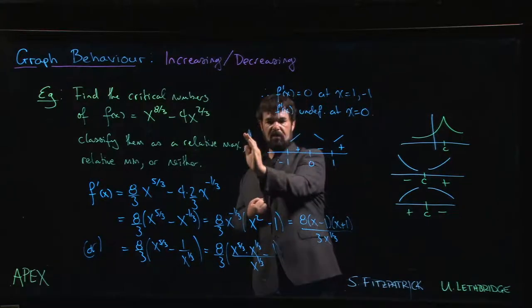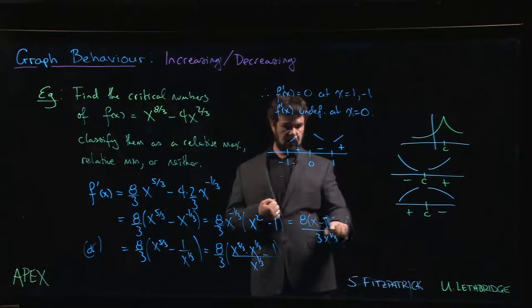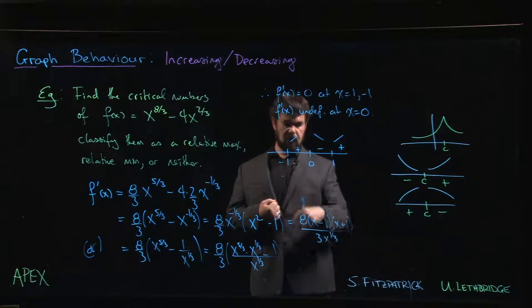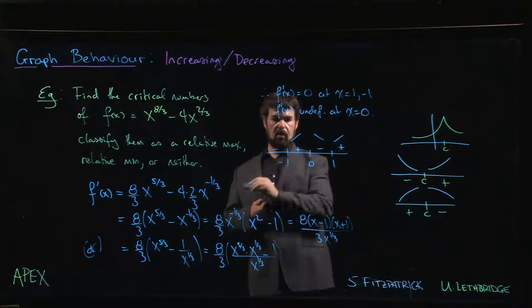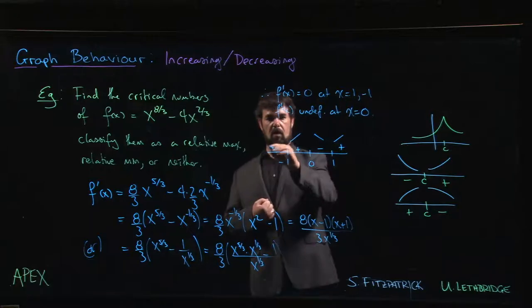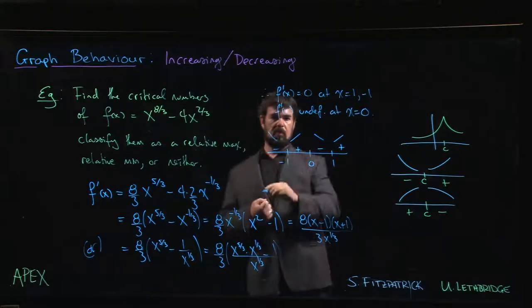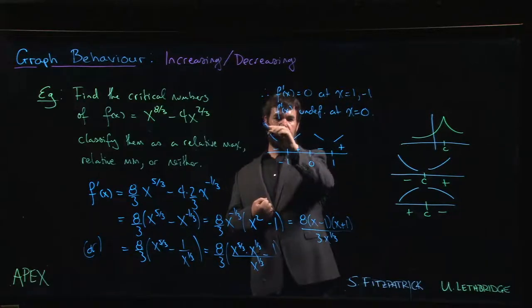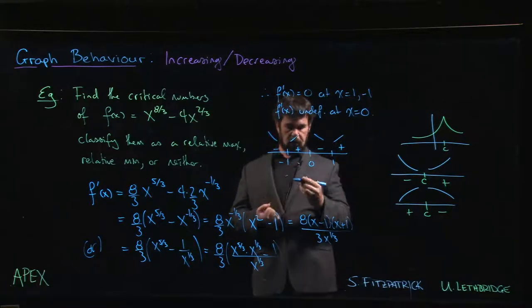Finally, if we're less than minus 1, this one is going to become negative. Now all three factors are negative. Three negatives gives you a minus - odd number of minus signs. So we have decreasing, increasing, decreasing, increasing.